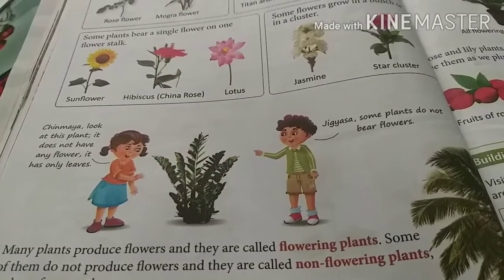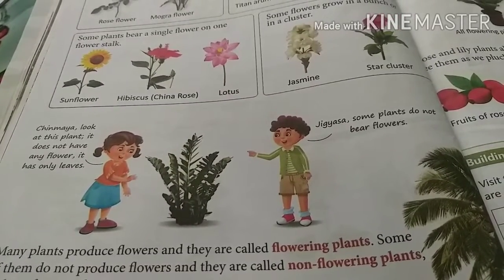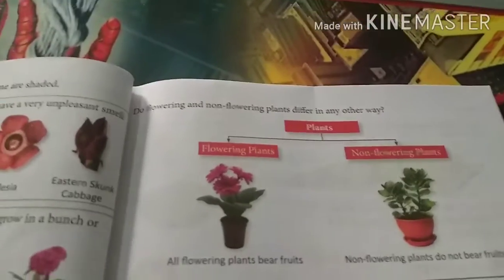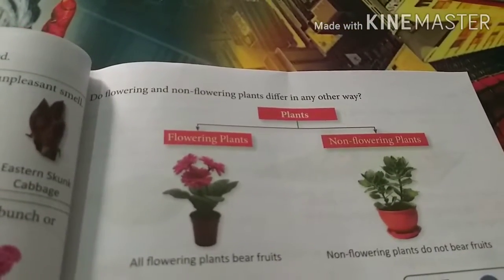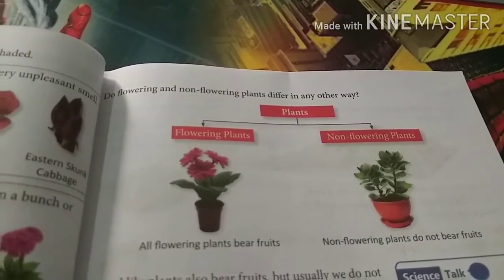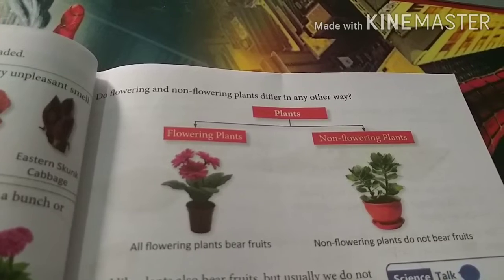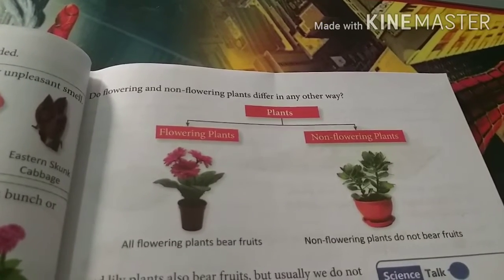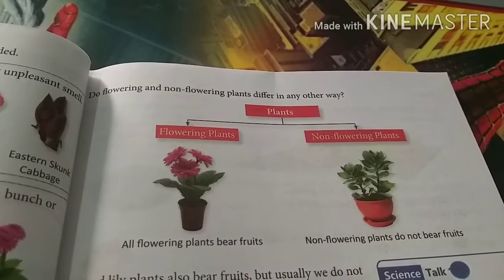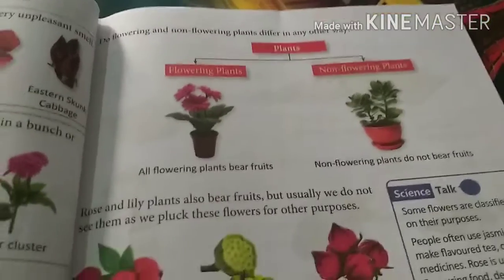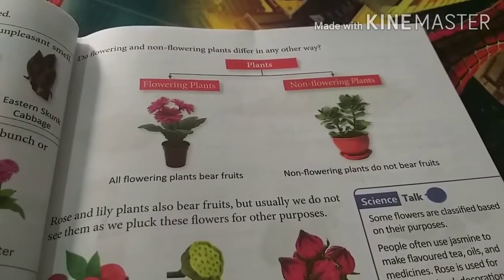Some plants do not produce flowers and they are called non-flowering plants. So plants are of two types: flowering — plants that have flowers — and non-flowering plants.